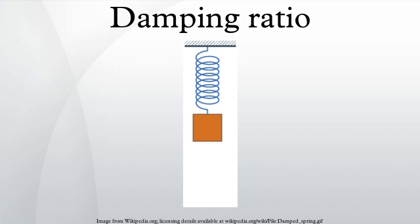In engineering, the damping ratio is a dimensionless measure describing how oscillations in a system decay after a disturbance.